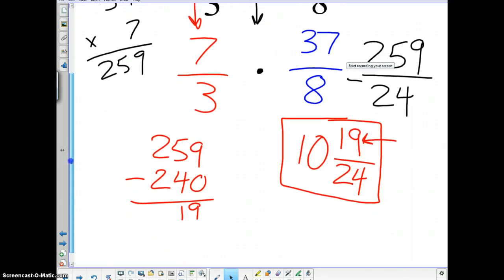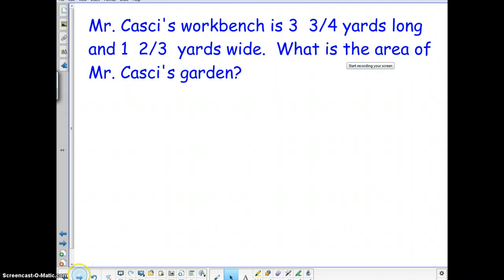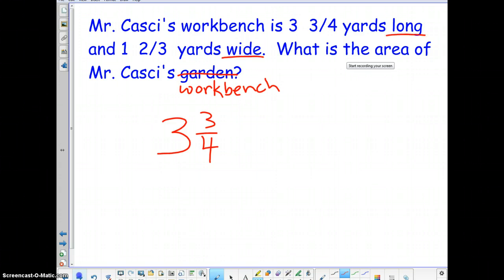All right. We do have one more example that I want to go through. It is a word problem. Mr. Kashi's workbench is three and three-fourths of a yard, three and three-fourths yards long. And one and two-thirds yards wide. What is the area of Mr. Kashi's workbench? So, what we have is three and three-fourths. And we have to multiply. If we're finding the area, we have to multiply the length and the width. So, three and three-fourths times one and two-thirds.